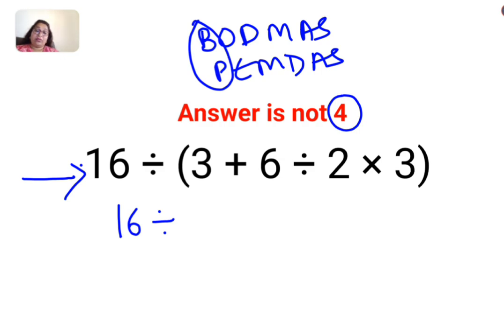Here in the bracket, what we are getting is 3 plus 6 divided by 2 multiplied by 3. Now a lot of people think that this is basically 6 divided by 2 into 3 is 6 and the answer is 1. No, that is not how this thing is supposed to be done. Please understand that.